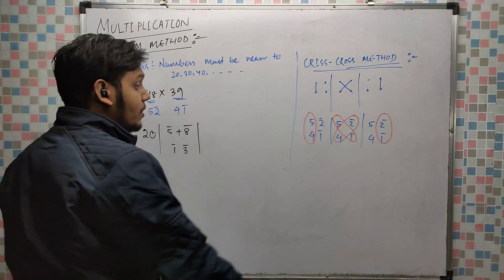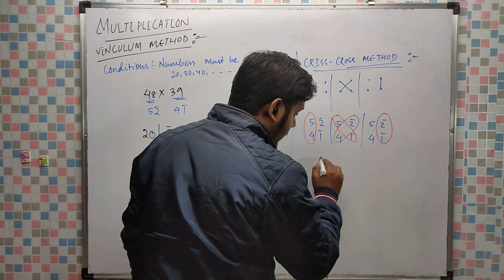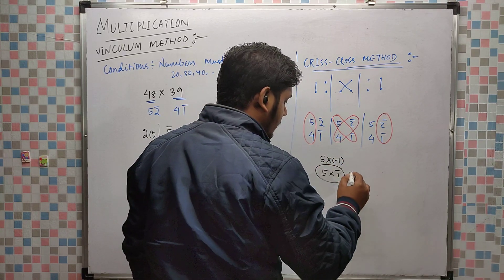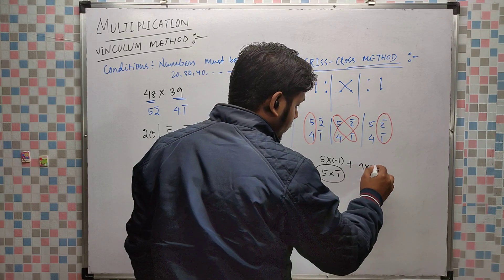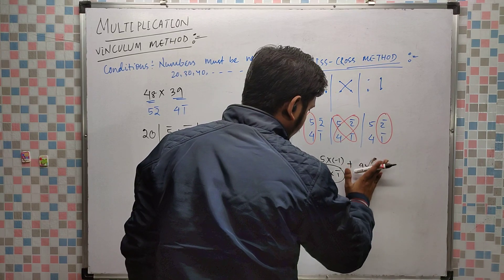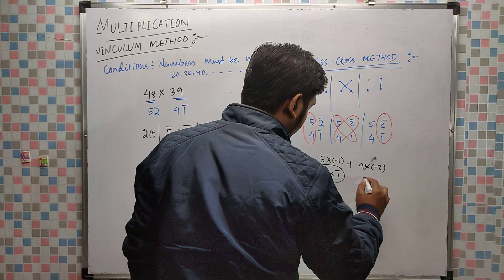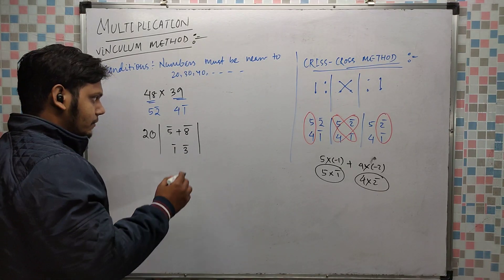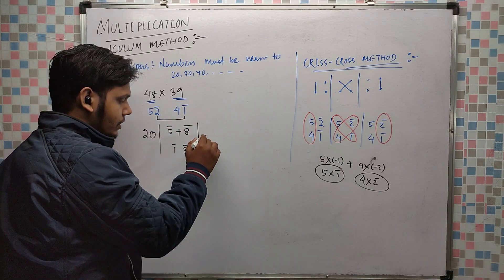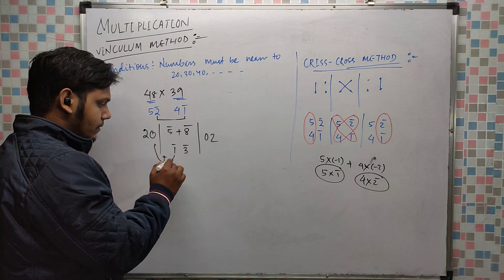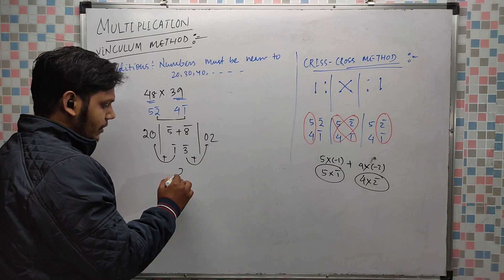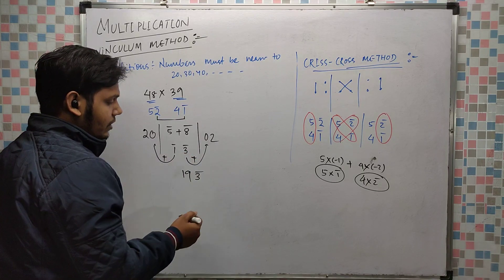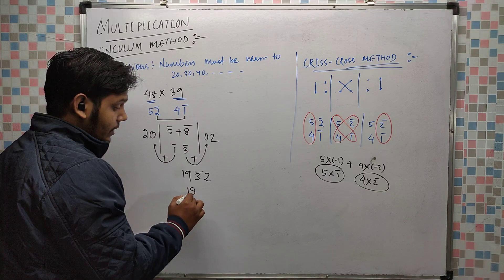And 4 into 2 minus 8. That means 1 and 3. Thereafter, minus 2 into minus 1 — that is plus 2. 5 into 1-bar: 5 into minus 1. Plus 4 into 2-bar: 4 into minus 2. Both are minus, so that gives 0. Now you have to balance: 20 minus 1 is 19. You have 0 and 3-bar, 3-bar and 2.